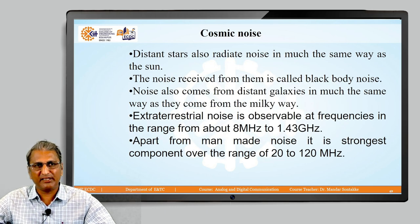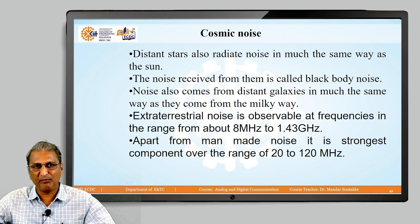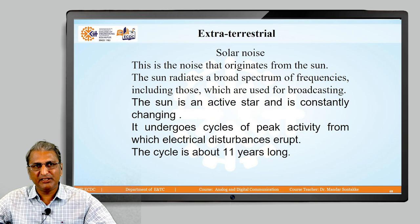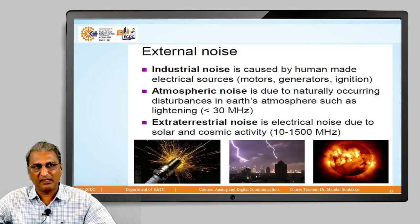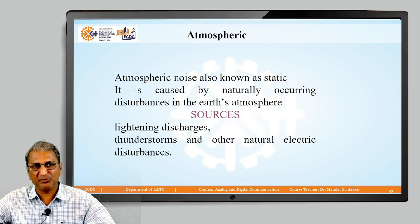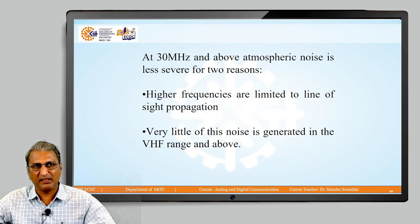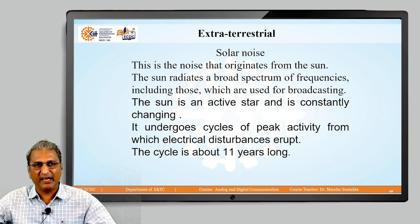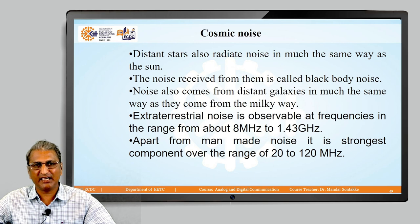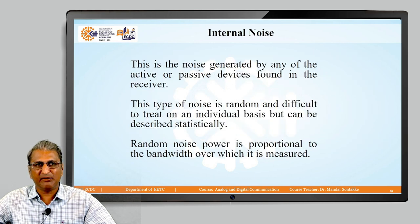The next type is cosmic noise. Distant stars also radiate noise in much the same way as the sun, and the noise received from them is called black body noise. Noise also comes from distant galaxies in much the same way as it comes from the Milky Way. This noise is observable at frequencies from 8 megahertz to 1.43 gigahertz, and apart from man-made noise, it is the strongest component over the range of 20 to 120 megahertz. In summary, external noises are atmospheric noise, industrial noise, extraterrestrial noise, and cosmic noise — these are the different types of noise that degrade the performance of the system.